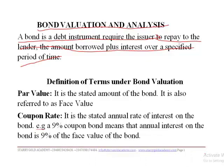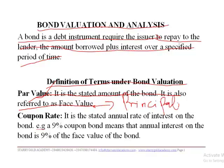After defining what a bond is, it is important to look at some definitions of terms under bond valuation. Number one is par value. Par value is the stated amount of the bond, also referred to as face value or principal. It is the core value of the bond without taking interest into consideration — essentially how much we want to borrow. The interest element is considered separately at the point of payment.